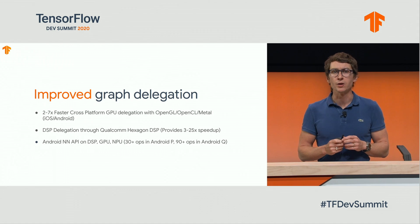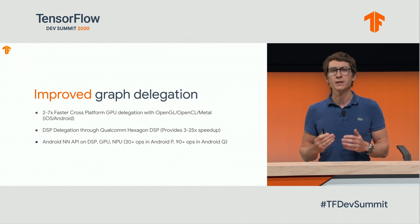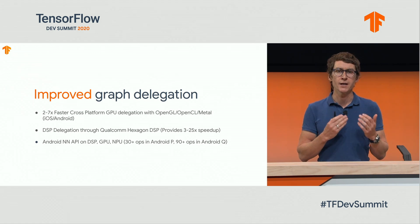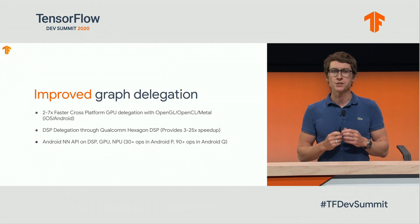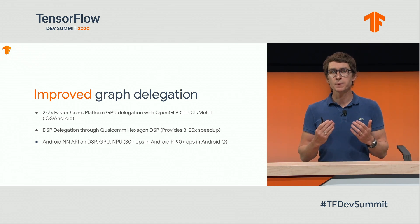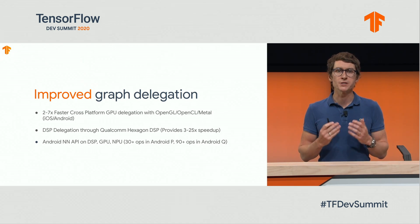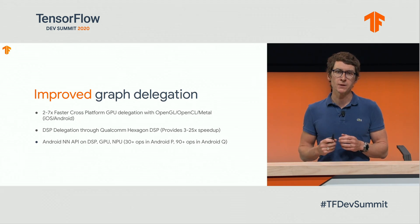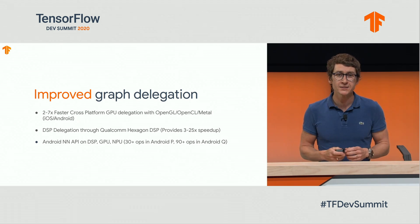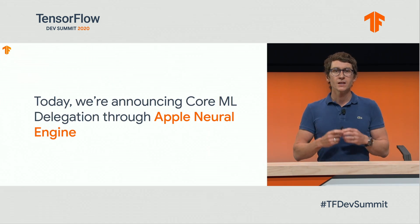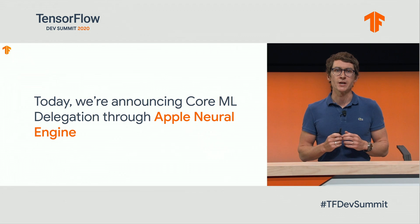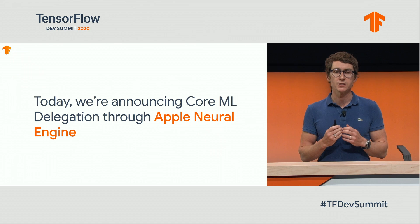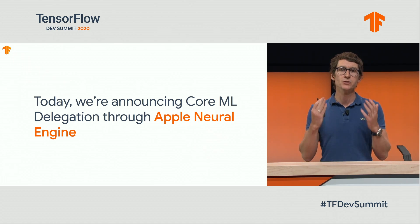Now we've got an exciting development in graph delegation. There are multiple ways to delegate your model in TF Lite — through GPU, DSP, or through the NNAPI in Android P and R. Recently, we've added increased GPU performance and DSP delegation through Hexagon, and we've increased the number of supported ops through the Android NNAPI. I'm excited to announce that as of today, we are launching a Core ML delegate for Apple devices to accelerate floating point models in the latest iPhones and iPads using TensorFlow Lite.